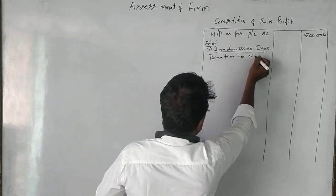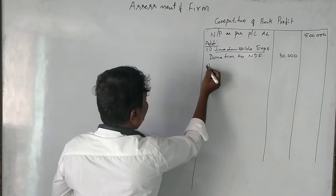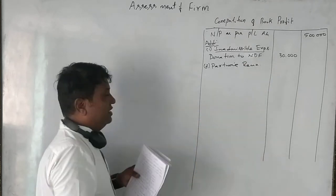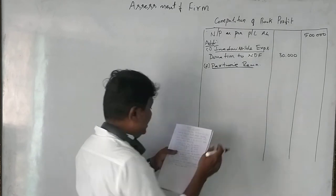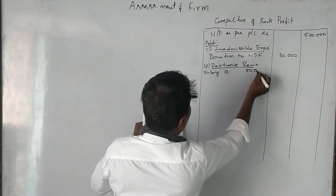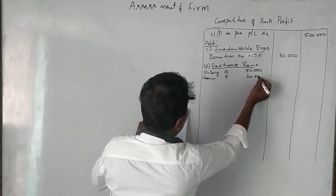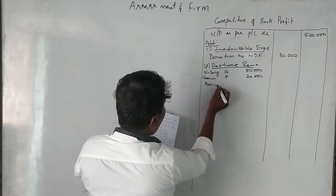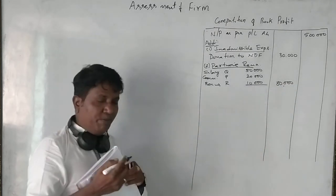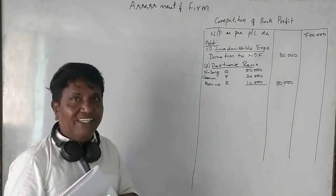The second addition is partners' remuneration. Partners' remuneration includes: salary of Q given as 50,000 rupees, commission to P given as 20,000 rupees, and bonus to R of 10,000 rupees. In total, 80,000 rupees is the remuneration paid to the partners, which is added back to the net profit.